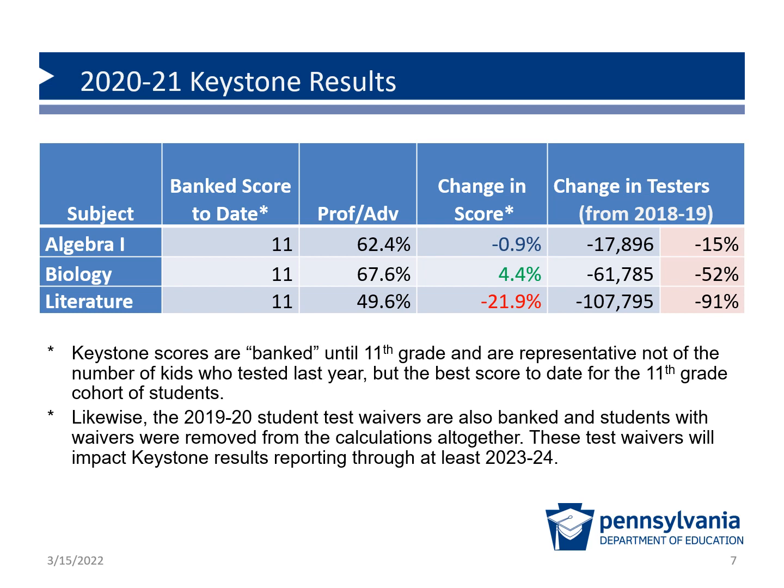The impact of low participation and the Act 136 waivers is perhaps best demonstrated by reviewing the 2021 Keystone exam results. Performance on the literature Keystone dropped 22%. However, that score is reflective of only 9% of the eligible testers. Most students received a waiver as 10th graders in 19-20 and are therefore exempted from the calculation. The score is most certainly a reflection of the participation, not of student performance.